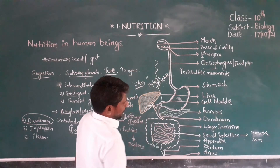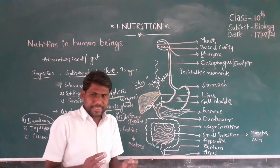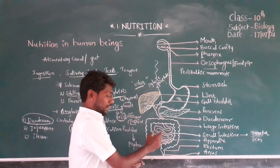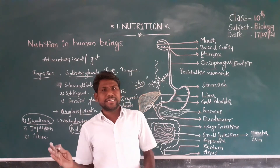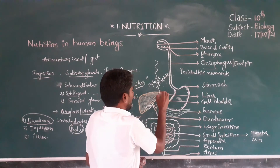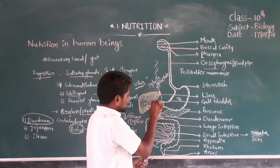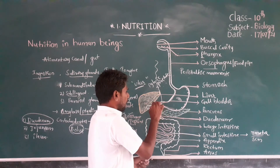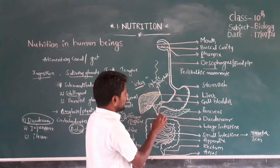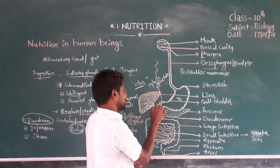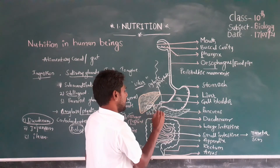Now let's discuss about the duodenum. The duodenum is the anterior part of the small intestine. At the duodenum, a mixed gland — the liver — is there. The liver secretes bile juice through the bile duct into the duodenum.